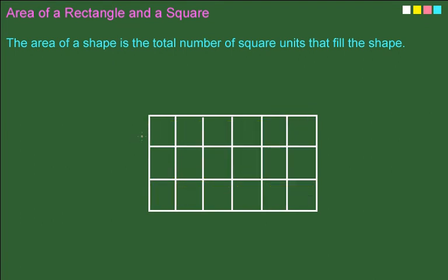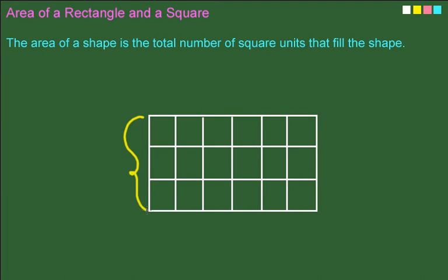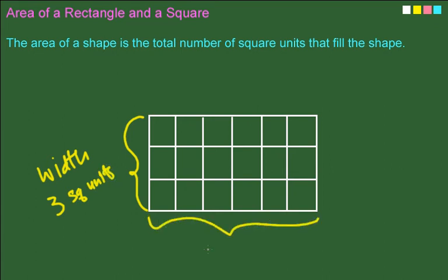If you count with me, as you can see on the side here, which is known as the width, there are 3 square units. And if you look at the length, it's 1, 2, 3, 4, 5, 6—6 square units. Do you see that?